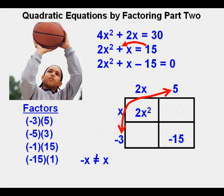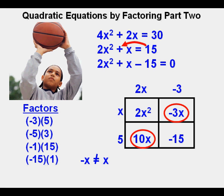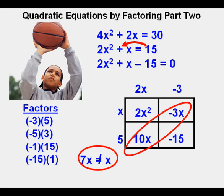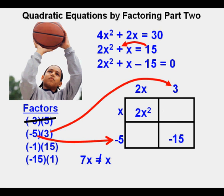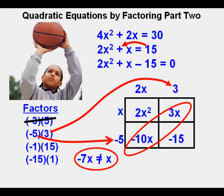The next logical step is to switch the positions of the 5 and the negative 3. With negative 3 on top and 5 to the side, the result is negative 3x in the upper right corner and 10x in the lower left corner. Combining, 10x minus 3x is 7x, which is not equal to x either. He crosses off the top factors on the list and moves to the next set: placing 3 on top and negative 5 to the side gives 3x and negative 10x; combining gives negative 7x, which does not equal x.